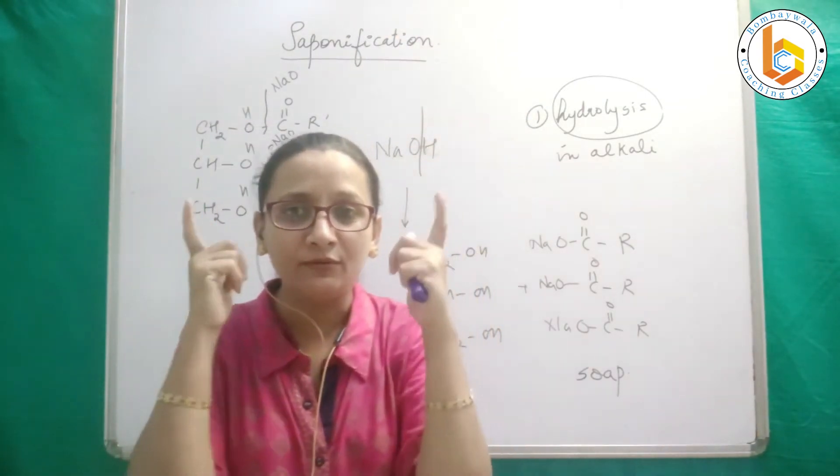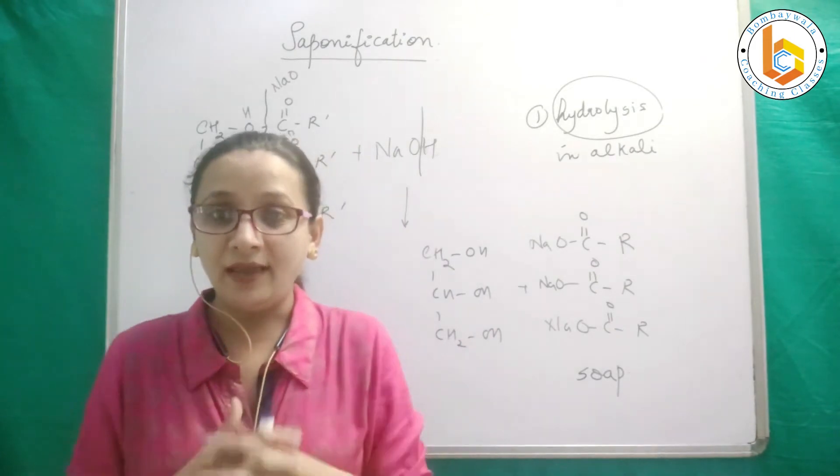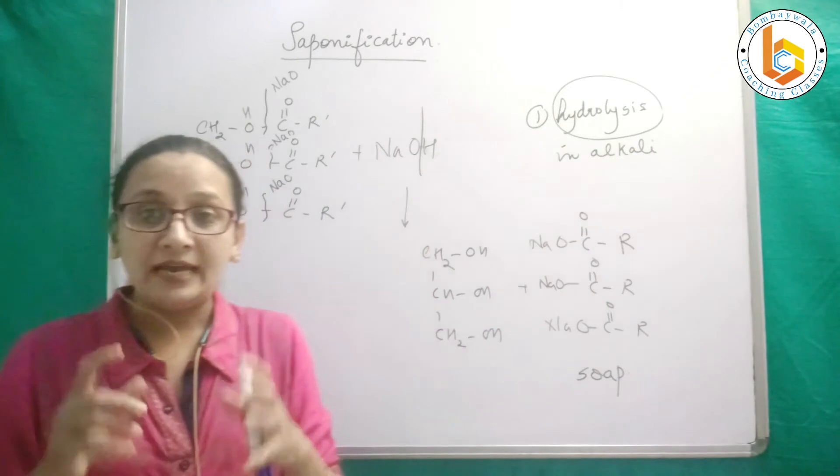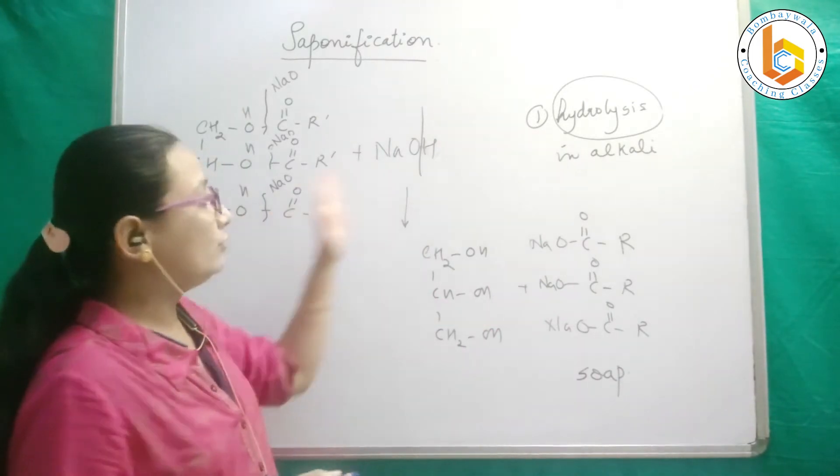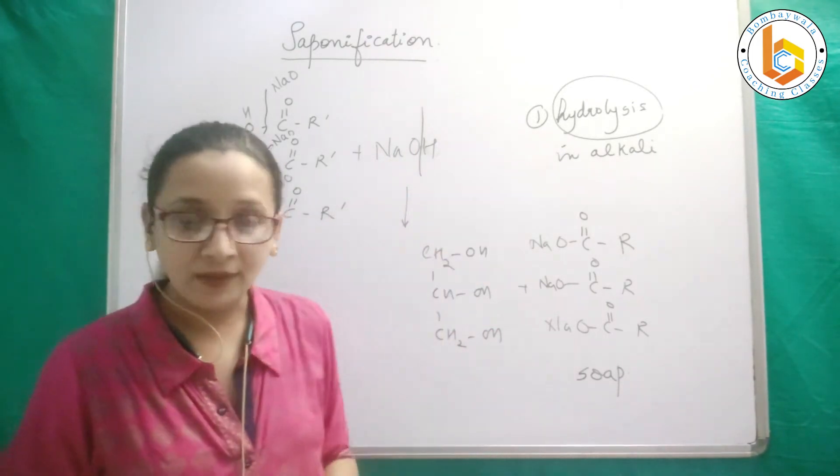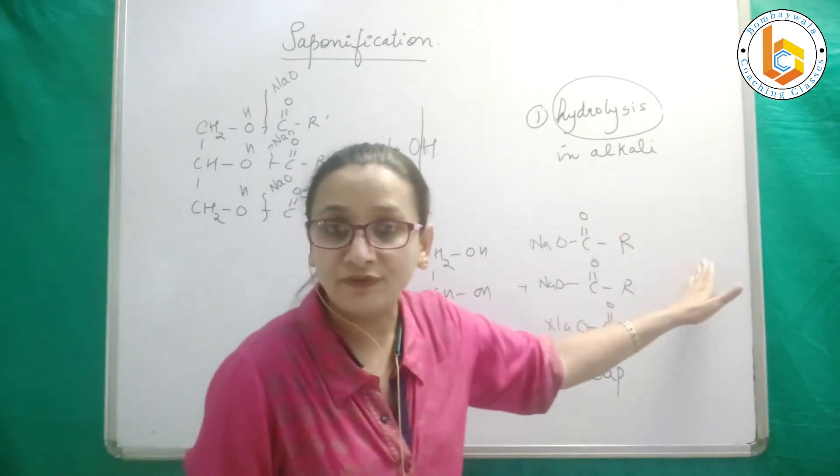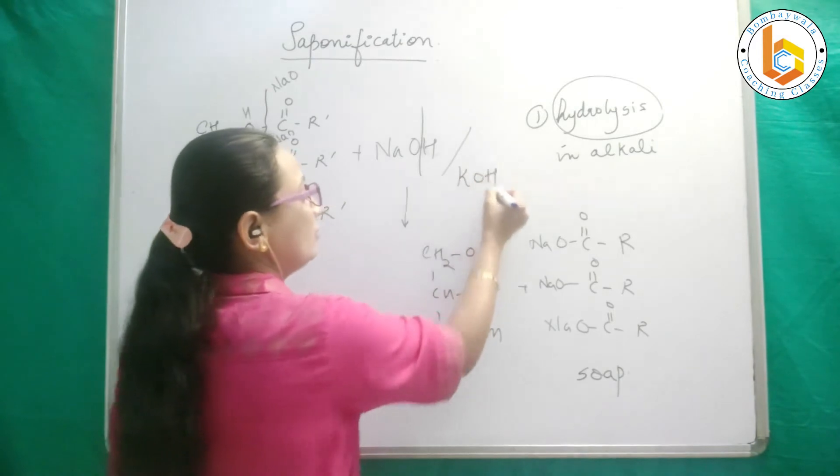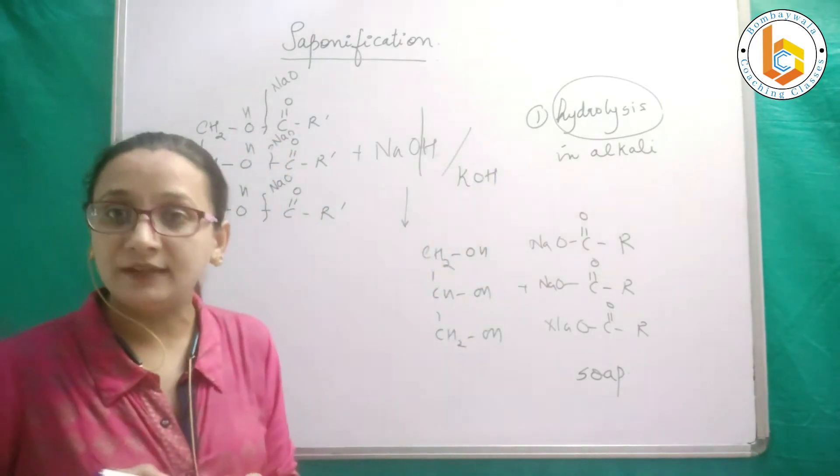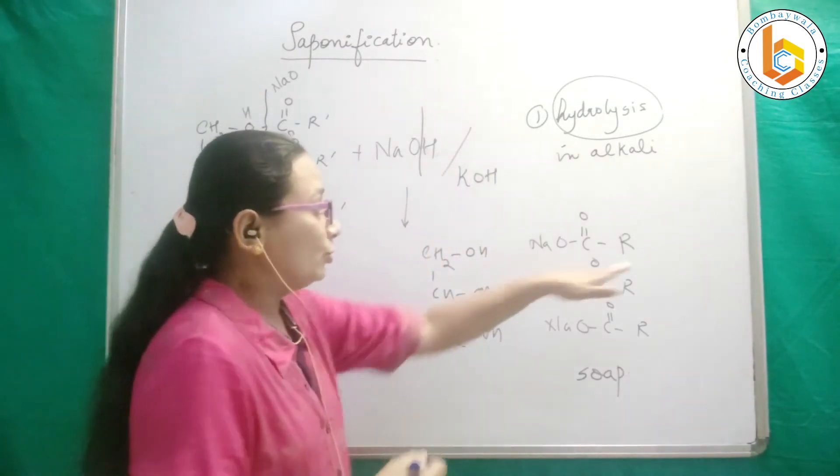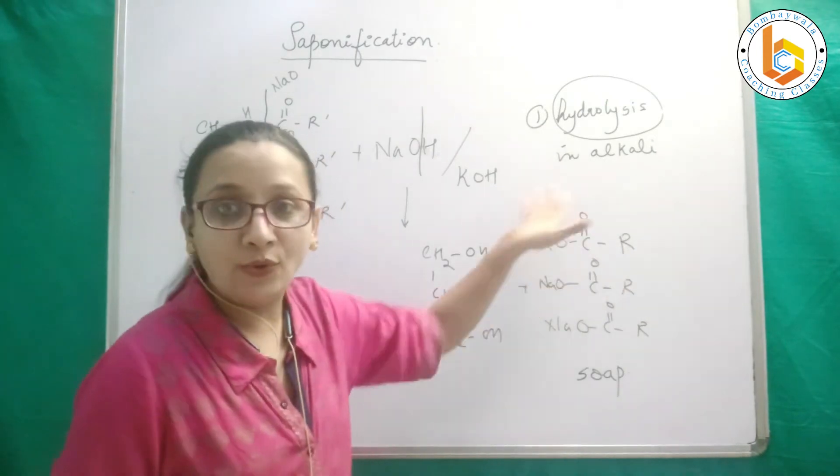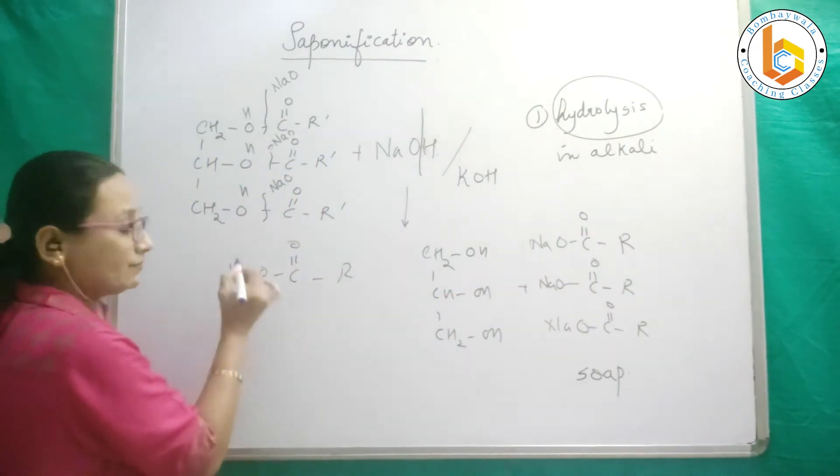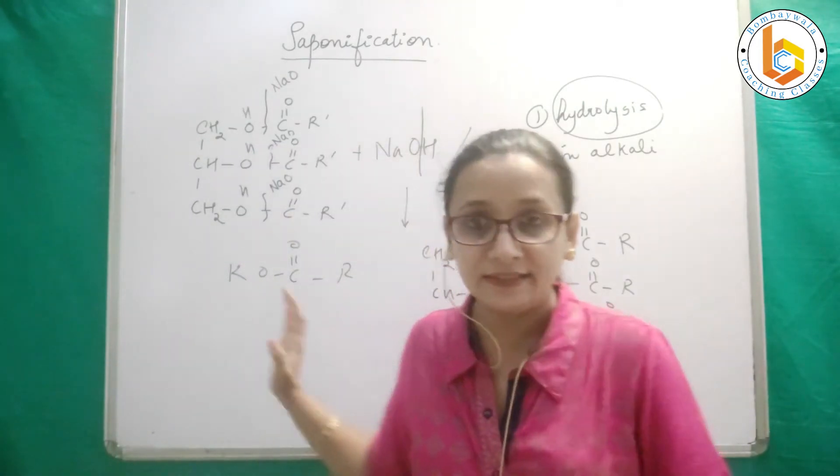Now what is the special thing about this reaction which is unique and important as per your GPAT? Suppose this saponification happened with NaOH, that means you got this sodium salt of fatty acid. Instead of that, you could have the option that you do saponification with potassium hydroxide. So you would get R-C-O-O potassium - you will get a potassium salt of fatty acid.